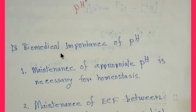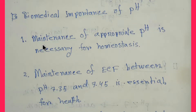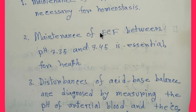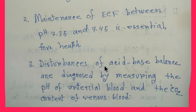Number one, maintenance of appropriate pH is necessary for homeostasis. Maintenance of ECF pH between 7.35 and 7.45 is essential for health.